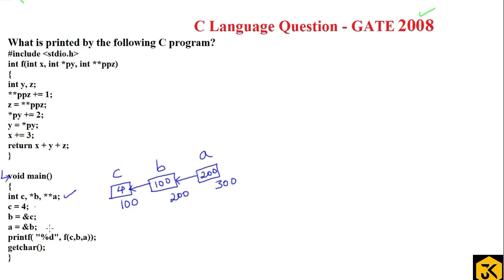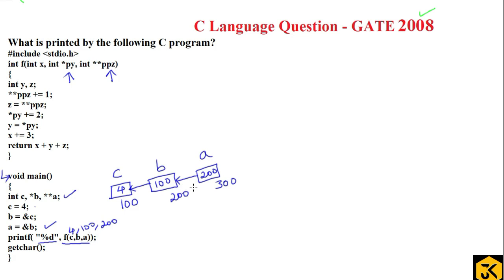They are trying to print an integer value returned by calling function f(c, b, a), meaning they are sending the values directly. The value of c is 4, the value of b is 100, and the value of a is 200. Since 100 is an address, the receiving parameter should be a pointer; since 200 is a double pointer address, the receiving parameter should be a double pointer. That is why they defined the same parameter structure.